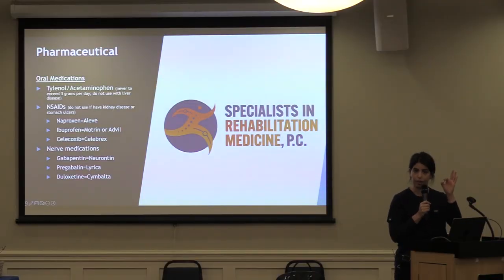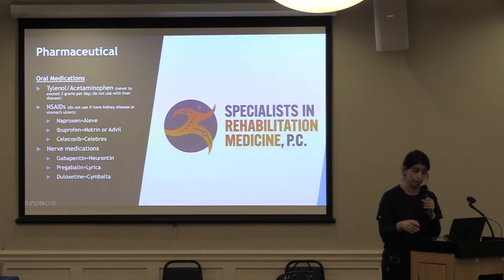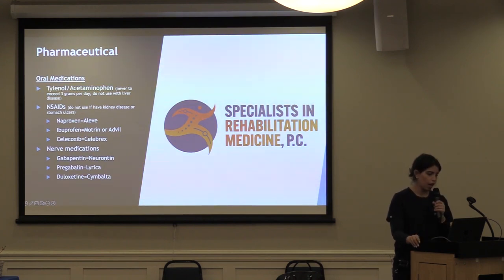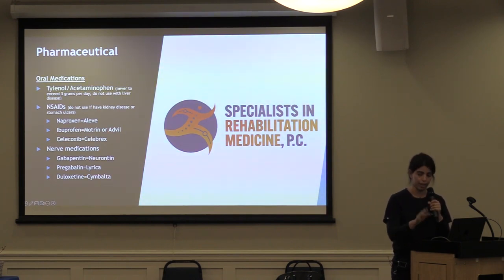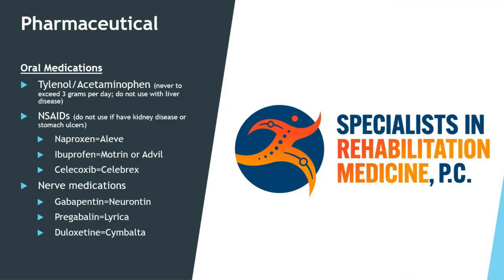Extra strength Tylenol tablets are 500 milligrams and regular tablets are 350 milligrams, so keep that in mind. If you have any liver disease, you don't want to use Tylenol in general. Non-steroidal anti-inflammatories include naproxen, which is Aleve; ibuprofen, which is Motrin or Advil; or celecoxib, branded as Celebrex. You don't want to use NSAIDs if you have any kidney disease or stomach ulcers.